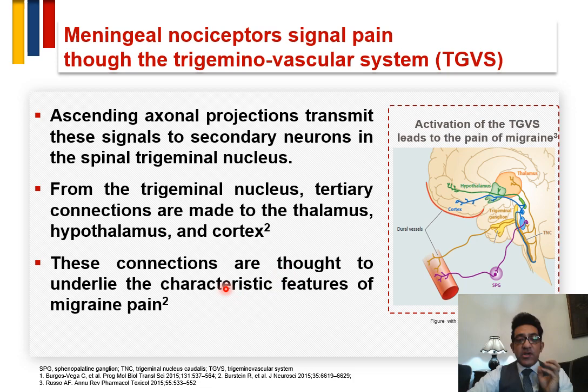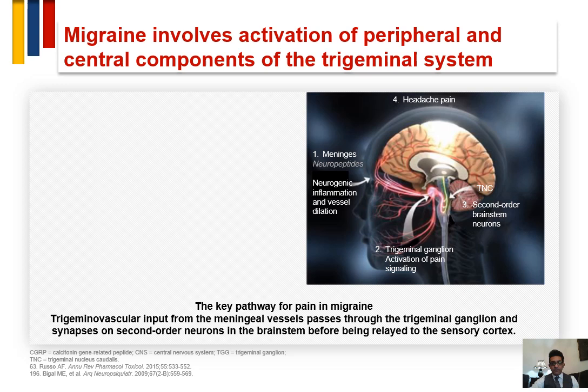These connections underlie the characteristic features of migraine pain. To revise: the pain starts from the meninges, back to the trigeminal ganglion, then to the spinal trigeminal nucleus, then to the thalamus, and back to the cortex.